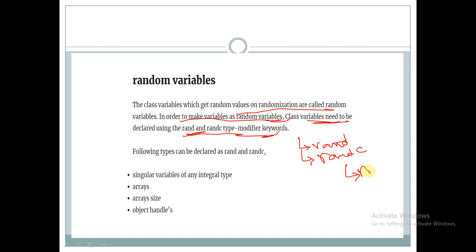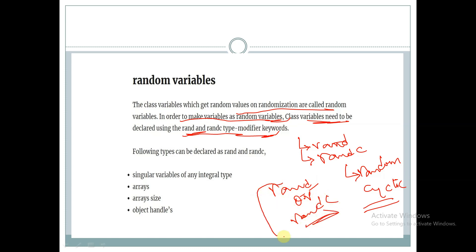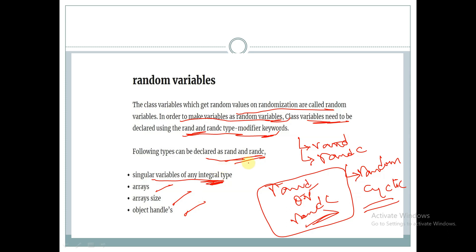randc stands for random cyclic. If a variable is declared as rand or randc, then only a random value for the variable is generated. The following types can be declared as rand or randc: singular variables of any integer data type, arrays, array size, and object handles.